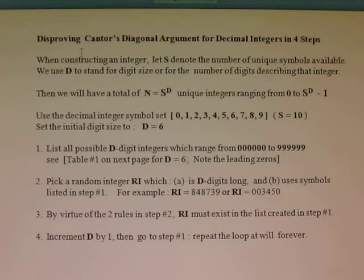Step 2: Pick a random integer RI which (a) is d digits long and (b) uses symbols listed in step number 1. For example, RI equals 848739 or RI equals 003450, either way.